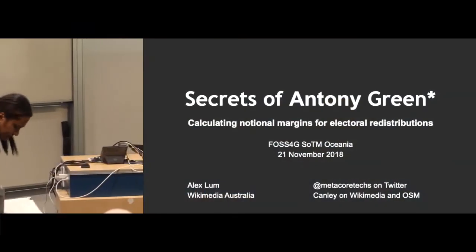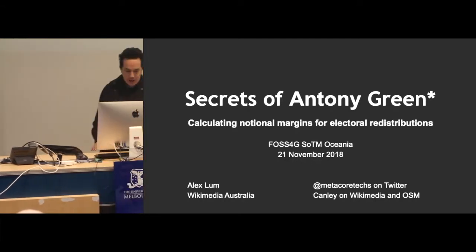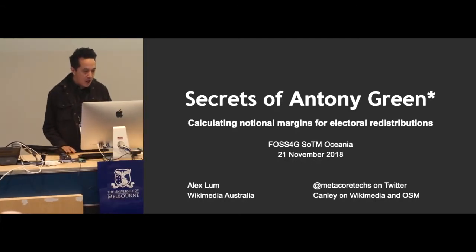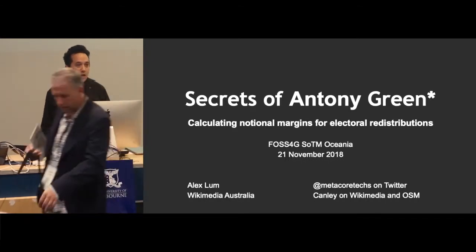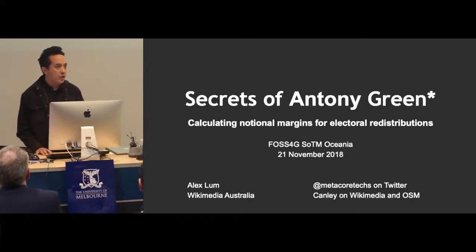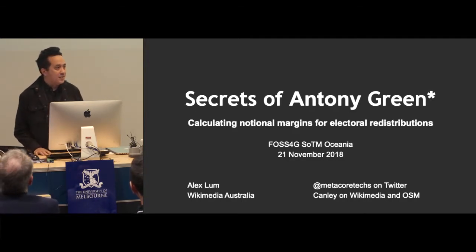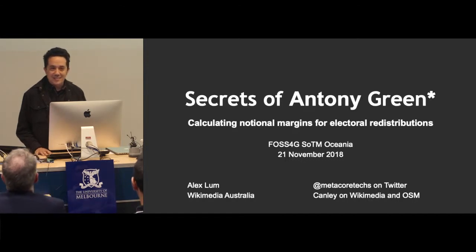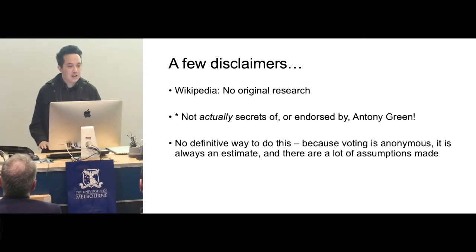Thanks everyone for coming along for a bit of a touch of politics this afternoon after that wonderful lunch. My name is Alex Lum, I'm representing Wikimedia Australia. My Twitter handle and my username on the Wikimedia projects and on OpenStreetMap — there's an asterisk next to the name of Anthony Green, the ABC election analyst, so I've rather cheekily used his name. I just want to start off with a couple of disclaimers.